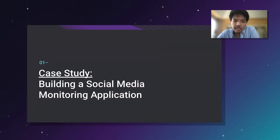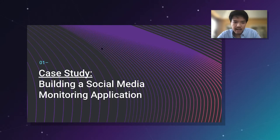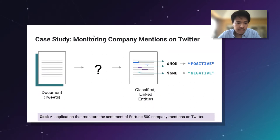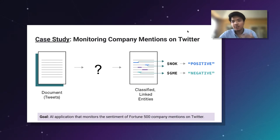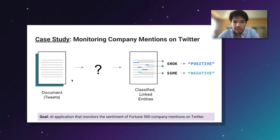To illustrate this, I'd like to start with a case study covering a specific application I've seen deployed in several high-value settings. We're working on a social media monitoring application where the goal is to build an AI system that monitors the sentiment of Fortune 500 companies on Twitter. If Nokia or GameStop are mentioned in tweets, can we figure out if they're being mentioned in a positive, negative, or neutral light?